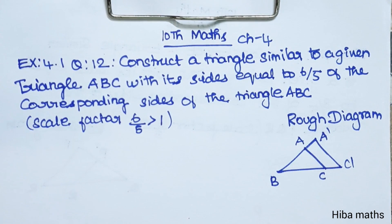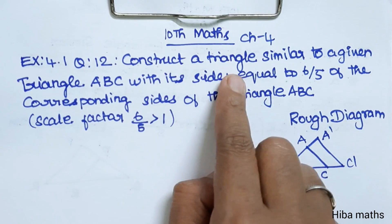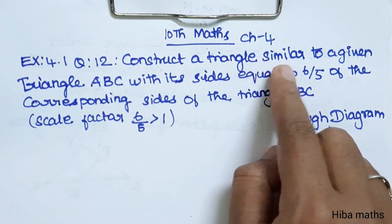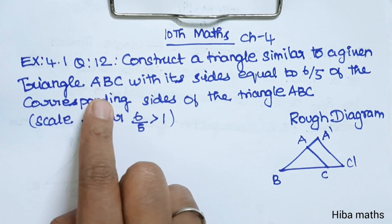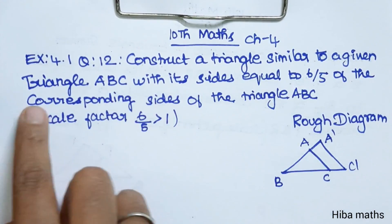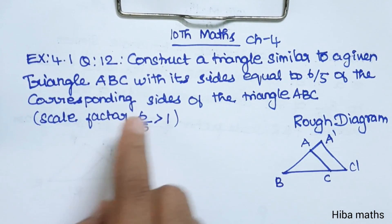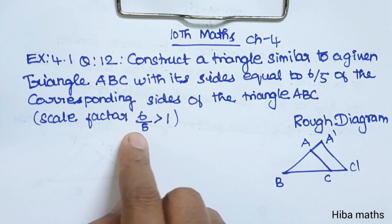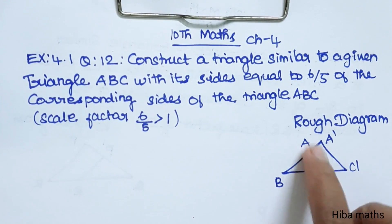Hello students, welcome to Hibamax 10 Standard Max Chapter 4 Exercise 4.1, 12th question. Construct a triangle similar to a given triangle ABC with its sides equal to 6/5 of the corresponding sides of triangle ABC. Scale factor is 6/5, which is greater than 1. The rough diagram is ABC.